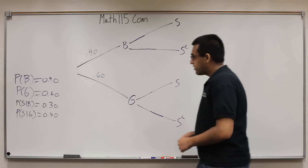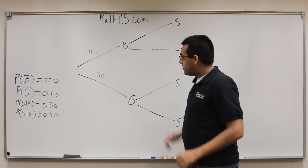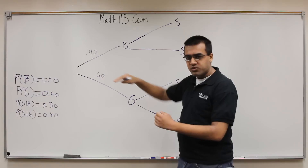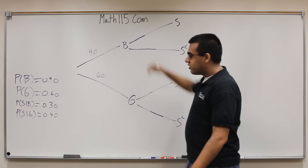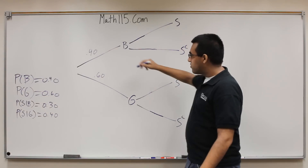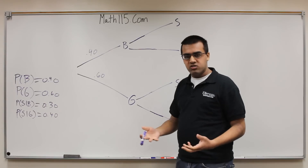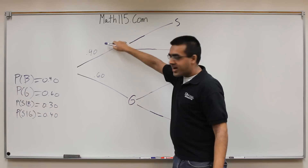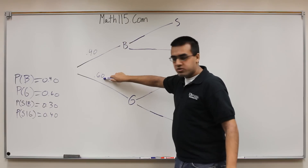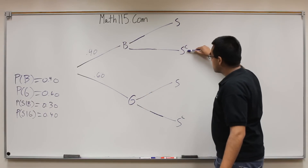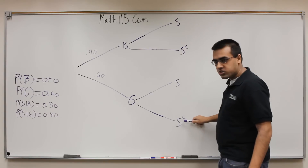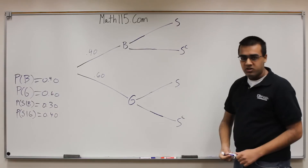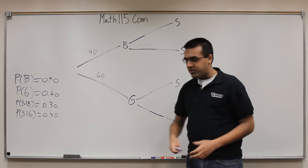Here's a simple rule to remember. When you're going across, you're always going to be multiplying — think intersections when you're going across. But when you're going vertically, you're always going to have mutually exclusive events, so your vertical numbers should add to one. This number and this number should add to one, this number and this number should add to one, and this number and this number should add to one. And then finally, all four of these end numbers should add to one as well. That's how you can verify your answer.